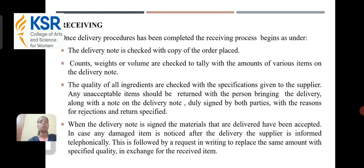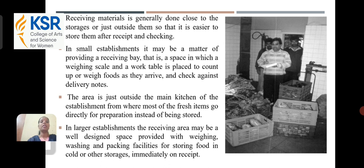In case any damaged item is noticed after the delivery, the supplier is informed telephonically. This is followed by a request in writing to replace the same amount with the specified quantity and quality in exchange for the received item. Receiving of materials is generally done close to the storage or just outside it, so it is easier to store them after receipt and checking. In small establishments, it may be a matter of providing a receiving bay — a space in which a weighing scale and a work table is placed to count or weigh foods as they arrive and check against delivery notes.